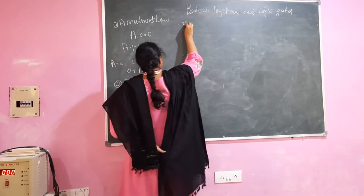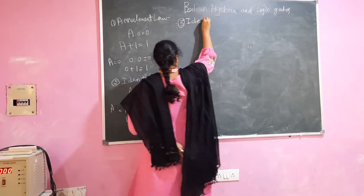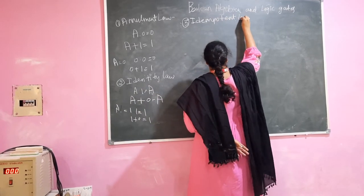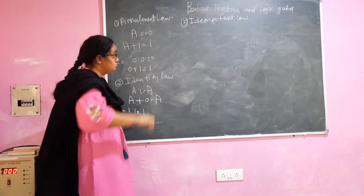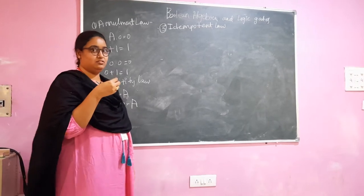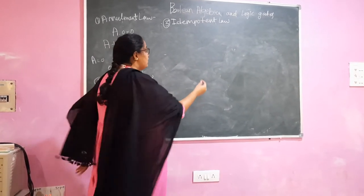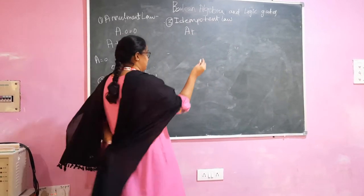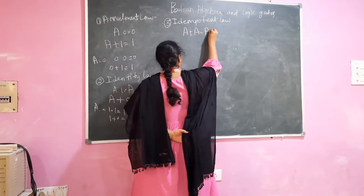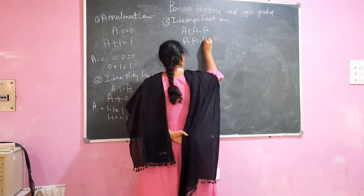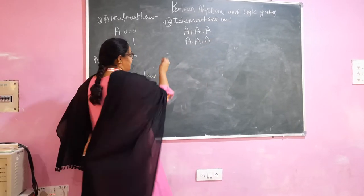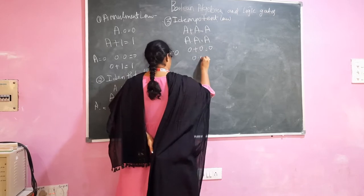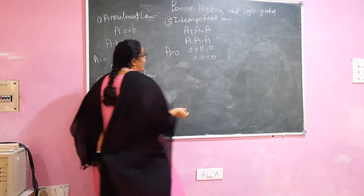Next, we look at the idempotent law. This states that when a variable is OR'd or AND'd with itself, we will get the same variable. For example, if we take A equal to 0, then 0 plus 0 will get 0, and 0 AND 0 will get 0. So this is what the idempotent law states.